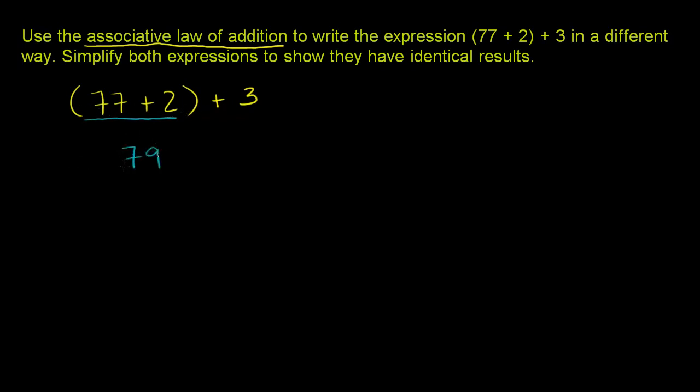So everything in the parentheses just evaluates to 79, and then you still have that plus 3. And 79 plus 3 is 82. So this is equal to 82.